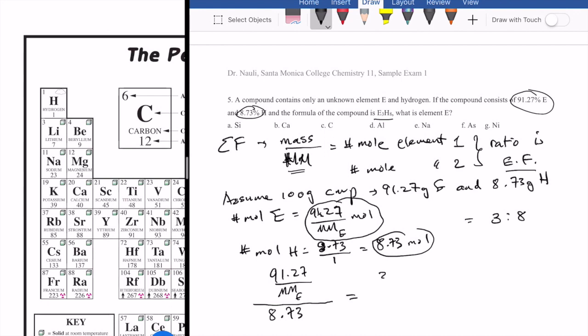So now this becomes an algebra problem, you can do a little cross multiplication, so you get 91.27 over molar mass of E times 8, that should equal to 8.73 times 3, and then if you isolate molar mass of E, that becomes 91.27 times 8 over 8.73 times 3. And all of this would have units of grams per mole